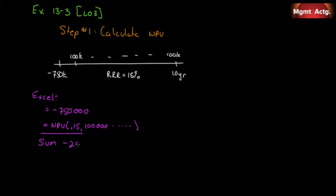Once I hit enter I can hit sum and I would get negative $248,123. So I know I have a negative NPV, but I need that. I need that to figure out, well, now how much, if these $100,000 cash flows were increased each year, how much would they have to be increased by for this to be zero?